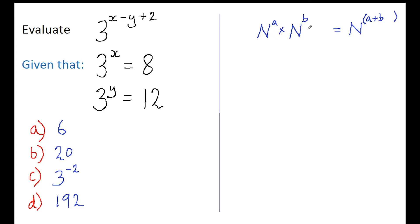And this applies to any number of terms, so we can keep adding terms here. Okay, let's use this in reverse to break this down. So this becomes 3 to the x multiplied by 3 to the minus y multiplied by 3 squared.